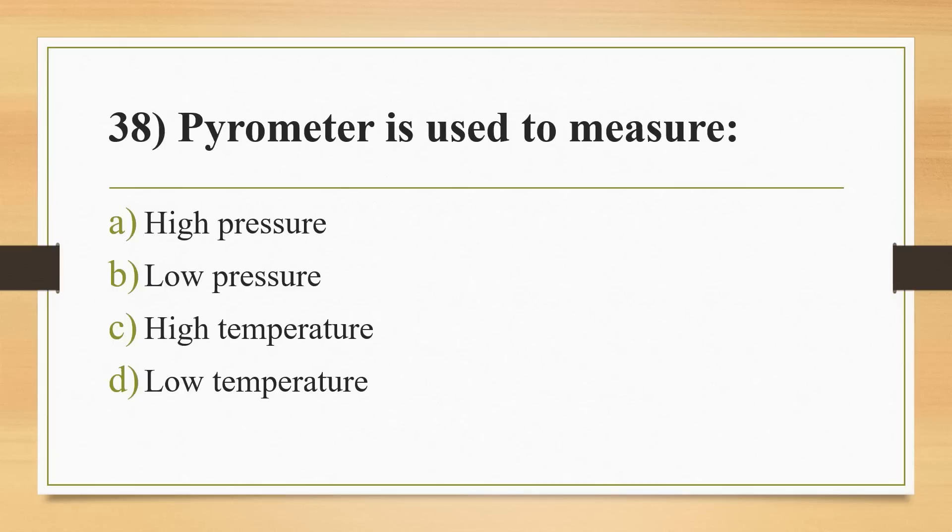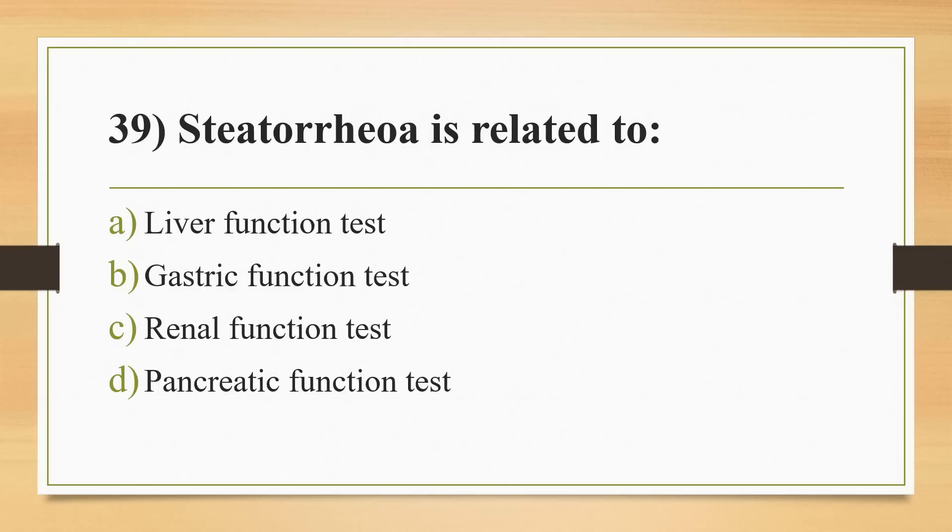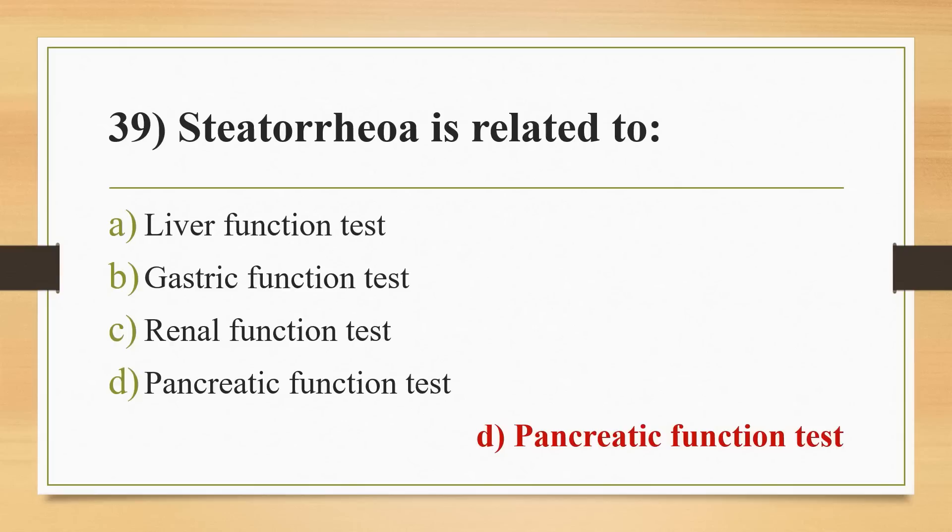Thirty-eighth question: pyrometer is used to measure? Options: high pressure, low pressure, high temperature, or low temperature. Answer is Option C, high temperature. Thirty-ninth question: stercobilin is related to? Options: liver function test, gastric function test, renal function test, or pancreatic function test. Answer is Option D, pancreatic function test.